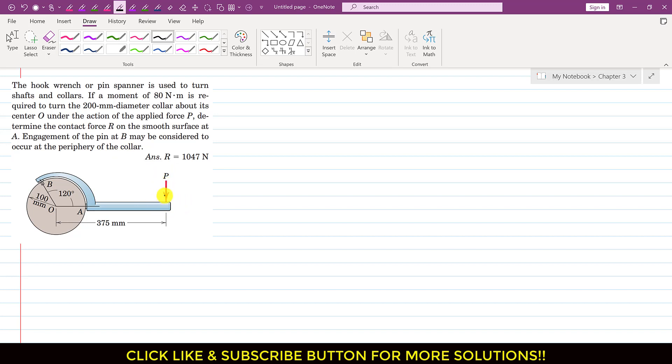So first of all, we have to find this P force and we will consider this spanner as a free body diagram. At A, this spanner will apply the force on this collar in this direction towards the left. So as a reaction, this collar will apply the same force on this spanner in the opposite direction.